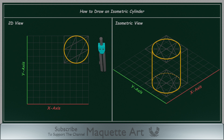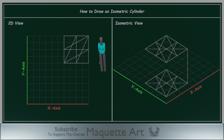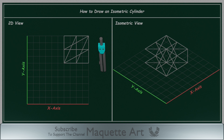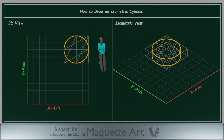The same method is used to draw a cylinder in the other 2 positions. Another thing to keep in mind when drawing cylinders of smaller height is that the construction lines may overlap — just make sure not to get confused between the lines.